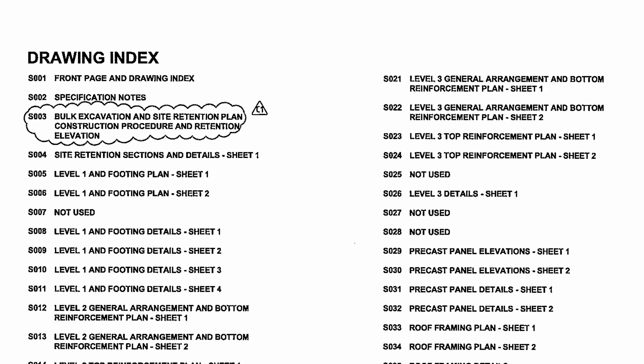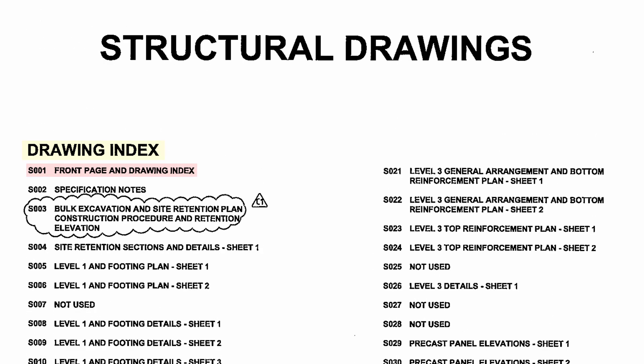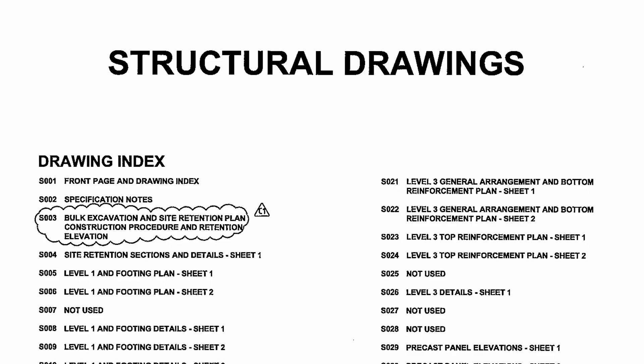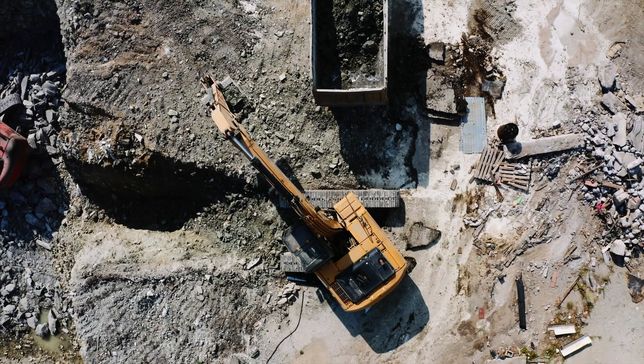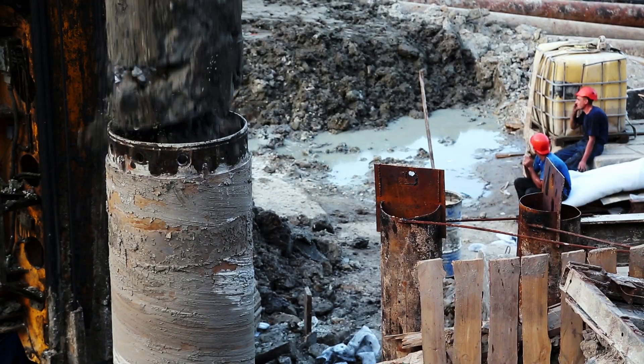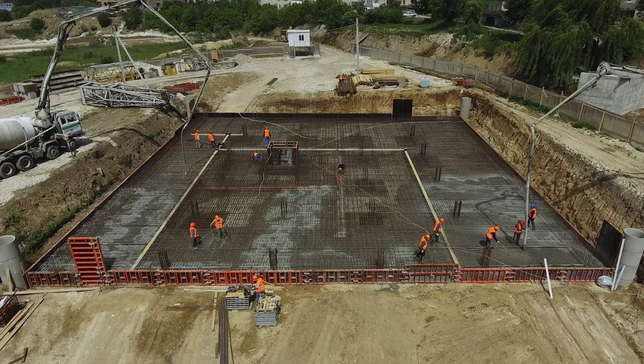Starting off with the basics: when we first grab our structural documentation set, it generally has an index page at the start that lists all the drawings and their order. You generally start off with general notes or specifications, as these need to be read prior to any construction. Then you start from the bottom up — excavation stage, moving up to piling, and then any floors above. Construction starts from the bottom up, and that's how we document our drawings.